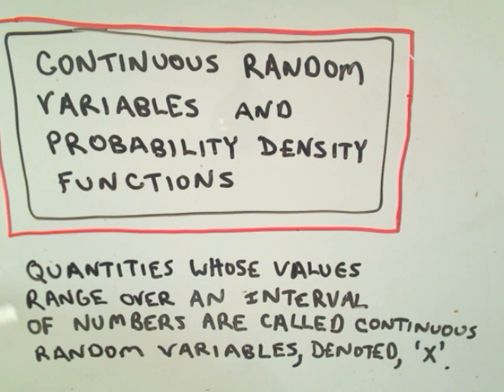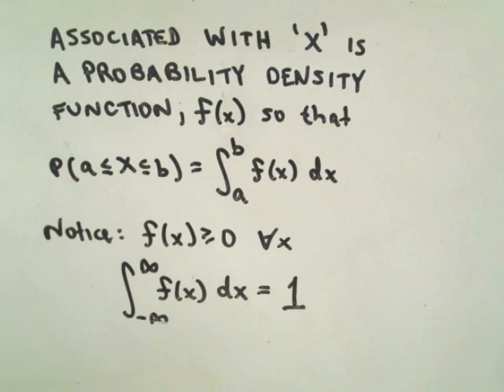So quantities whose values range over an interval of numbers are what are called continuous random variables. And we'll do a concrete example of that here.